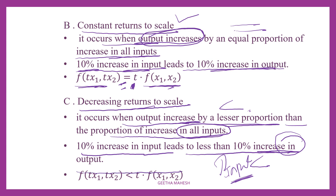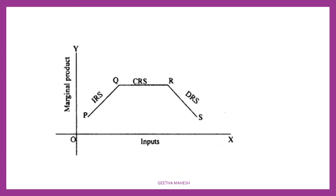Symbolically, decreasing returns to scale can be written as: f(t·x1, t·x2) < t·f(x1, x2). In the diagram, on the x-axis inputs are measured, and on the y-axis marginal product is measured.